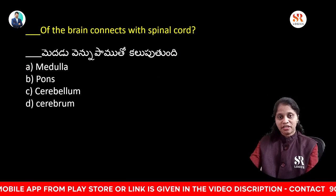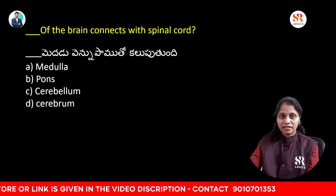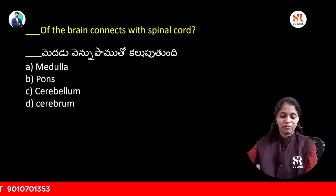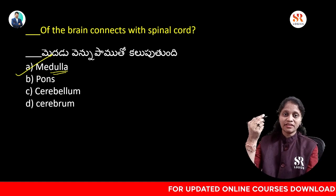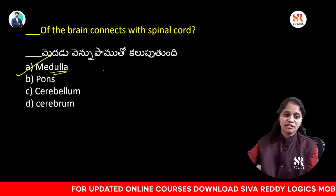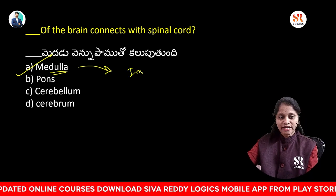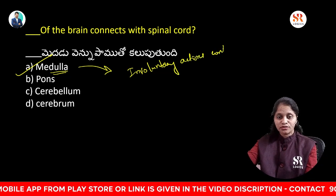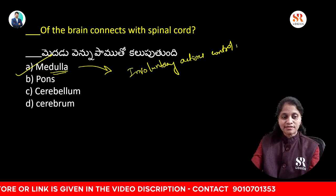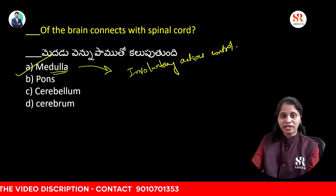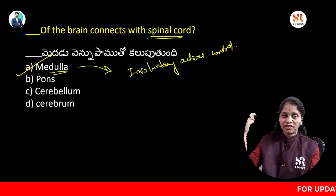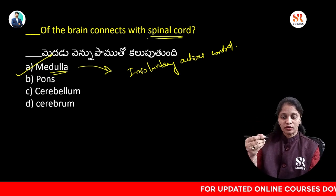Which part of the brain connects with the spinal cord? Options: medulla, pons, cerebellum, cerebrum. The medulla is generally the part that connects the brain to the spinal cord. It is involved in most involuntary actions. The answer is medulla oblongata.